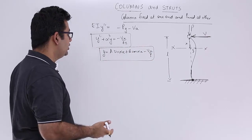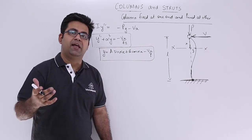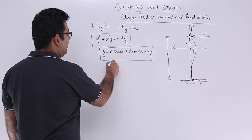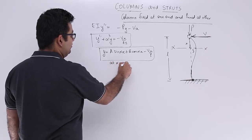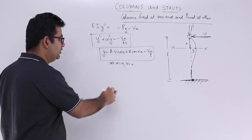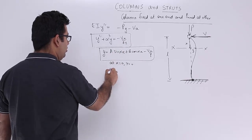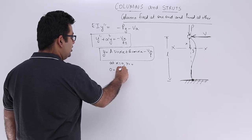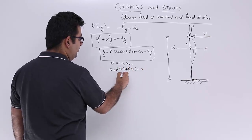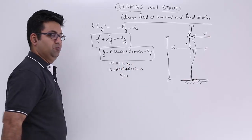Now it is all but a game of applying the end conditions onto it. So the very first end condition is that at x is equal to 0 the value of y is 0. So when you put that condition into this you get 0 is equal to a into 0 plus b into 1 minus 0 which means b is 0.